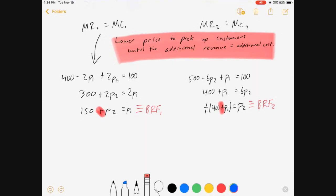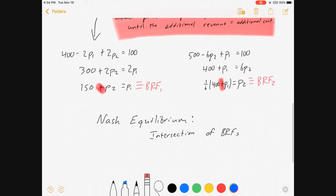One thing to note about these best response functions: they both have positives in front of the other firm's prices. In a price war, if my competitor raises prices, my best response is to raise prices too, because I can do so without losing customers, and I can make more money. So, should be positive. If it comes out negative, you did it wrong.